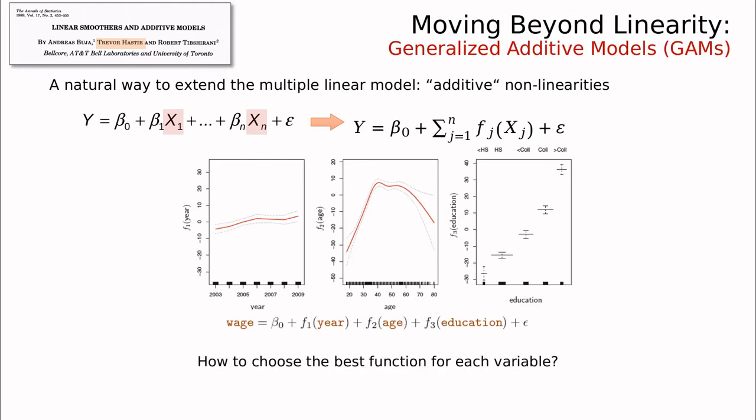The question is how to choose the best function for each variable — how can we tell if this is a parabola or something more complicated, and this is a linear function? We're going to do this in several steps, as there are different choices for choosing those functions, and I'm going to show you just the main ones.